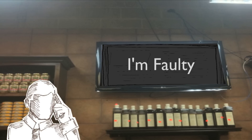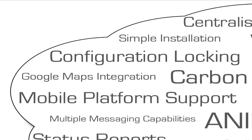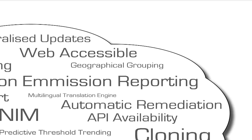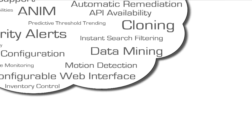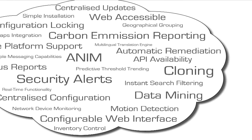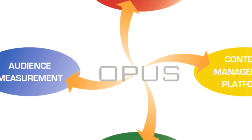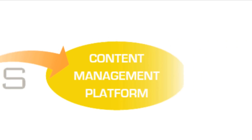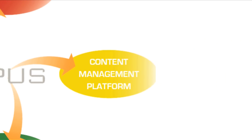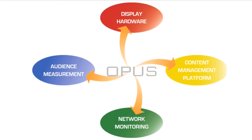Wouldn't it be good if the displays told you what was happening? Opus can tell you if your screens are on or off, receiving a good signal, or whether your content is playing or not, and many more features. Although Opus is a full product as a standalone solution, its API capabilities even allow Opus to interact with your existing system such as your content management system or audience measurement system to form a fully unified solution.